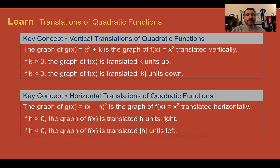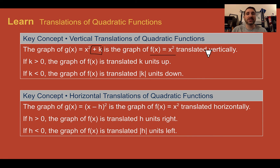Let's learn translations of quadratic functions. We've already seen translations, which is just a slide, a couple times this year through different units. This one follows more closely to exponentials than to linear functions because of the way things look. A vertical translation of a quadratic function is written as plus k at the end of the parent function, which for quadratic is x squared. For a vertical translation, just like for exponential functions, k follows what it says: if you see a number greater than zero, that's going to shift your quadratic function that many units up; if you see minus a number, it's going to shift it down.